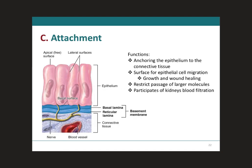Next, we have attachment, which mainly means that the epithelium is going to be attached to the connective tissue through what we call the basement membrane. The basement membrane is divided into two layers: the basal lamina and the reticular lamina. The main thing to know is that the epithelium is attached to the connective tissue through the basement membrane.